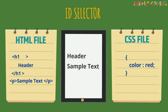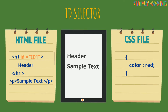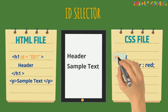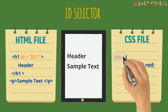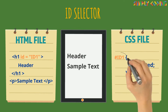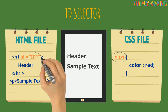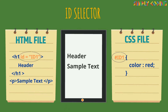Next is the ID selector, which uses the unique ID attribute of an HTML element to select a specific element. The selector of the style rule is written with a hash character followed by the ID of the element. In this example, we have used ID 1 as the selector and it will apply wherever this ID is used in the main HTML document.